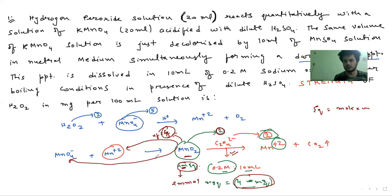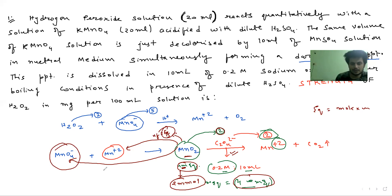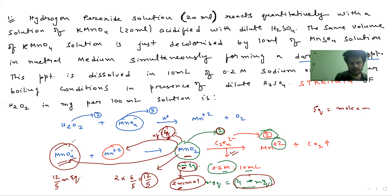The n-factor is 6 by 5 and the moles are 2 millimoles, so n-factor is 6 by 5. MnO4- milliequivalents are calculated as millimoles into n-factor, which is 2 into 6 by 5, giving 12 by 5. So 12 by 5 milliequivalents of MnO4- are used here. MnO4- goes from +7 to +4, so the n-factor is 3.